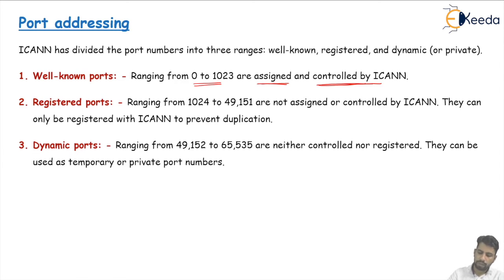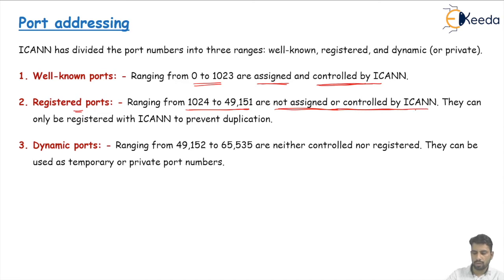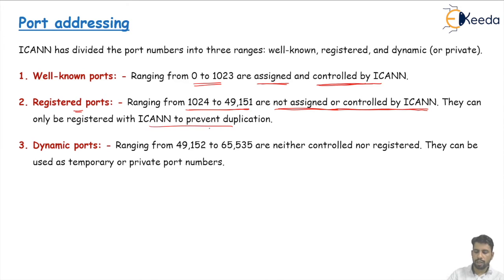Registered port numbers range from 1024 to 49151. They are not assigned by ICANN and not controlled by ICANN — anyone can use them. You can go to the ICANN organization and register a port number between 1024 and 49151. Once registered, ICANN will ensure that port number is not given to another organization or service, preventing duplication.